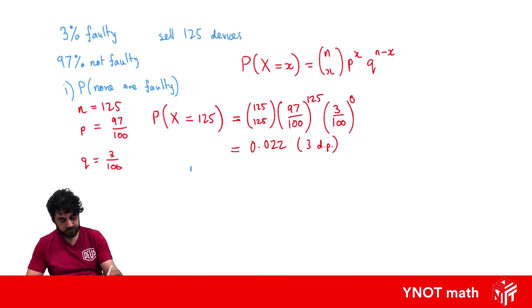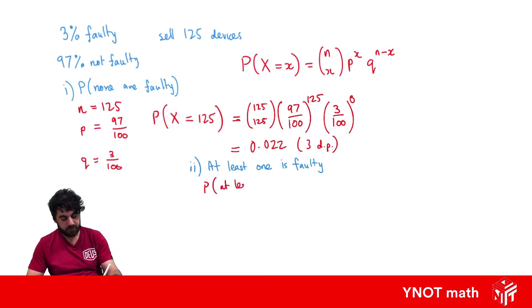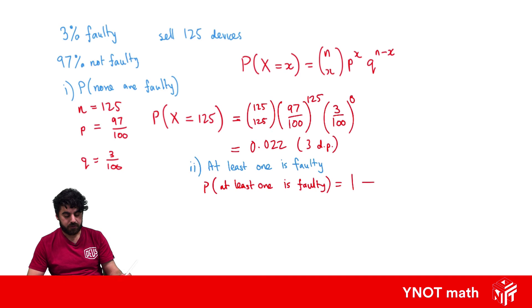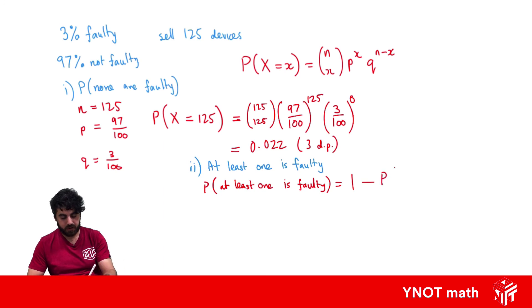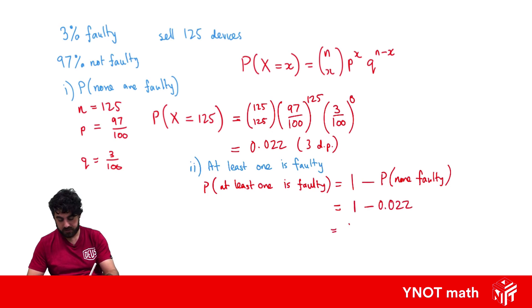Next we look at the probability of at least 1 being faulty. When we see 'at least,' we can think about 1 minus the complement. The complement of 'at least 1 faulty' is 'none being faulty.' So it's 1 minus the probability of none being faulty, which is 1 minus 0.022, giving us 0.978 to 3 decimal places.